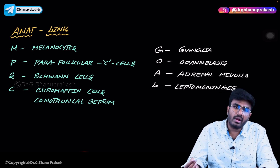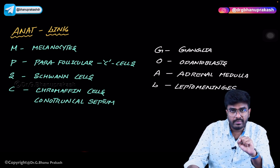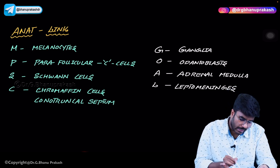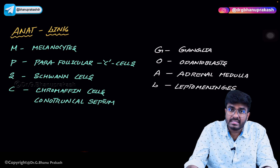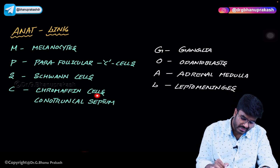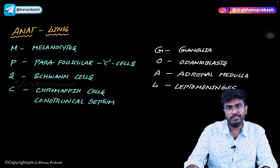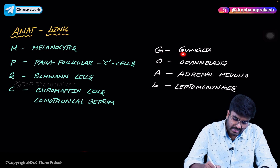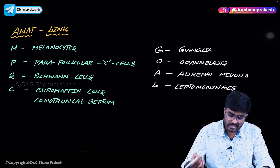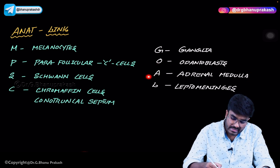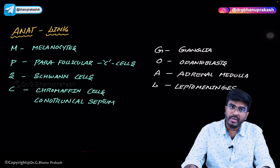S is for Schwann cells, which are the myelinating cells in the peripheral nervous system. C is for chromaffin cells, which are present in the sympathetic and parasympathetic ganglia and conotruncal septum. G is for ganglia — ganglia are also derived from neural crest cells — and odontoblasts, which form bones. A is for adrenal medulla, which as we discussed is neural crest in origin, while the adrenal cortex is derived from intermediate mesoderm.